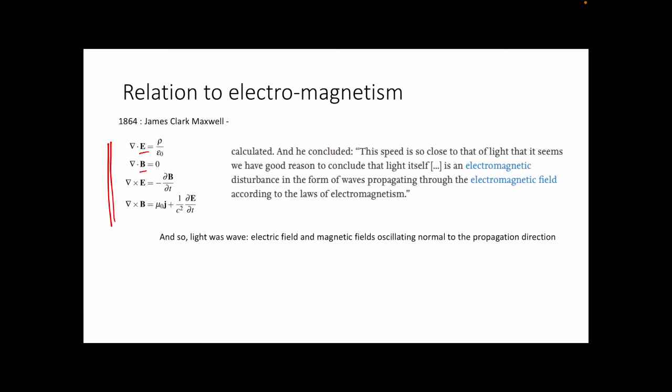Before Maxwell, the relationship between electric and magnetic fields had been studied for some time. Maxwell came up with a beautiful set of equations — this form was probably written by Hertz but is called Maxwell's equations. The solutions to Maxwell's equations are waves, and the velocity of such waves was found to be close to the speed of light measured by Foucault. So it was assumed that light is an electromagnetic wave propagating at the speed of light.